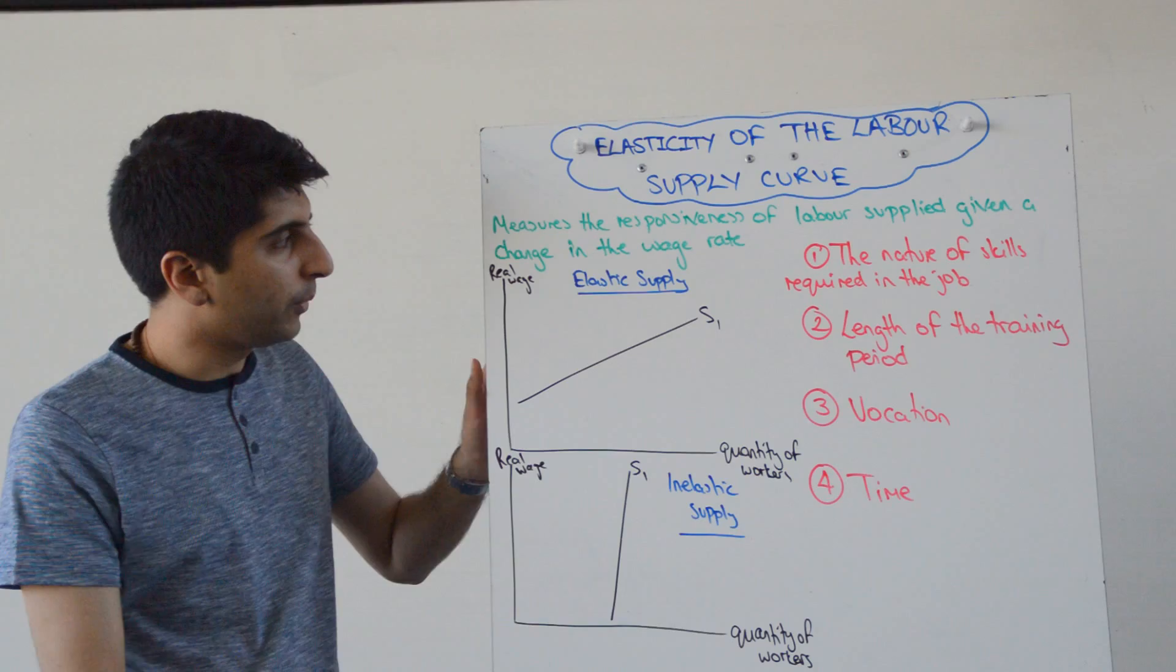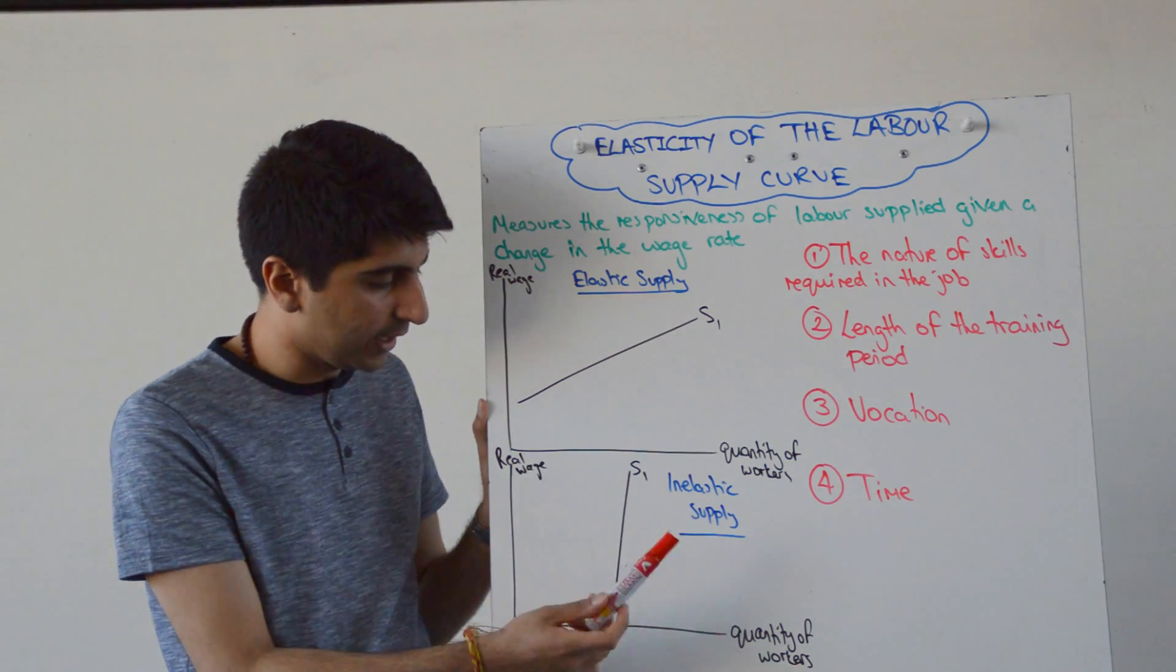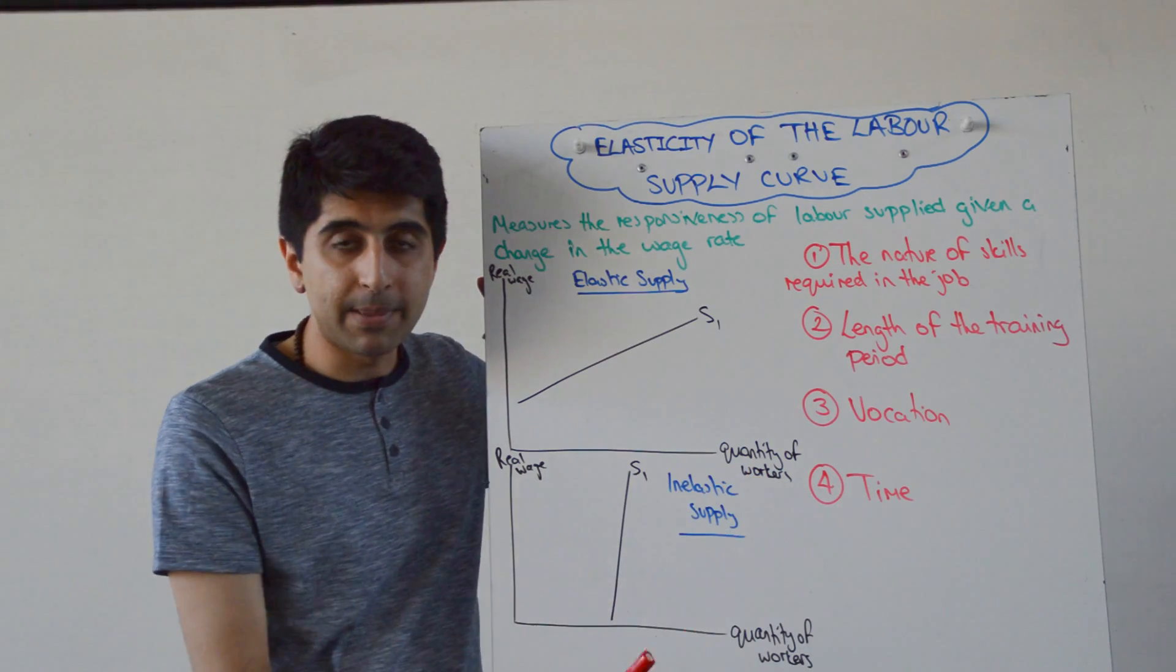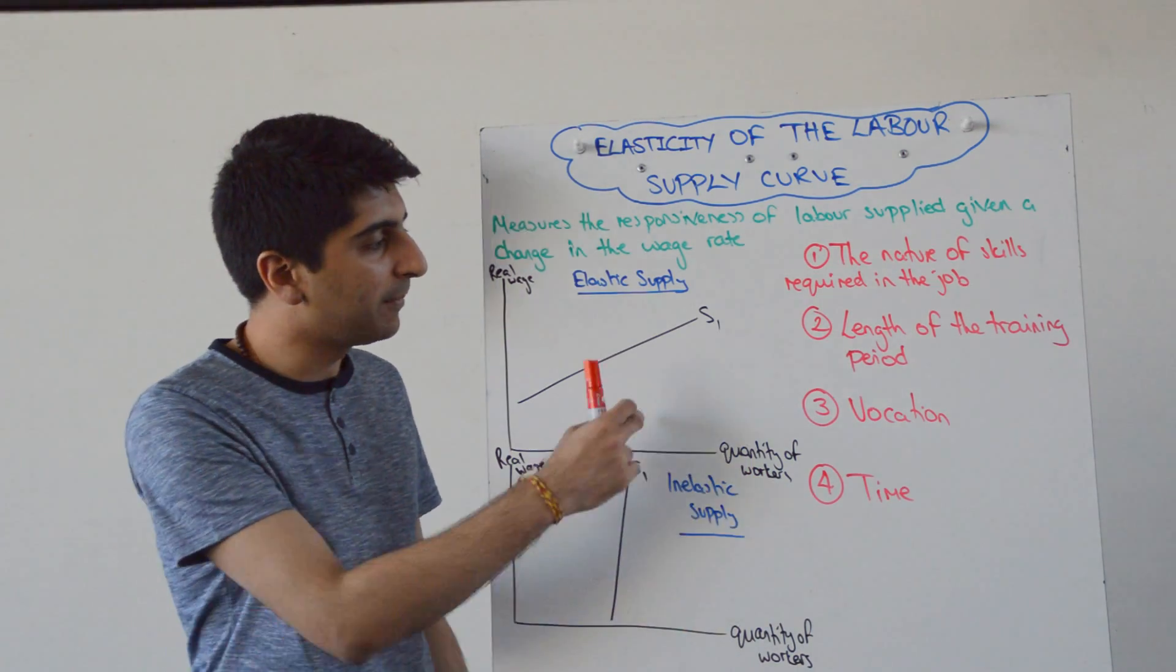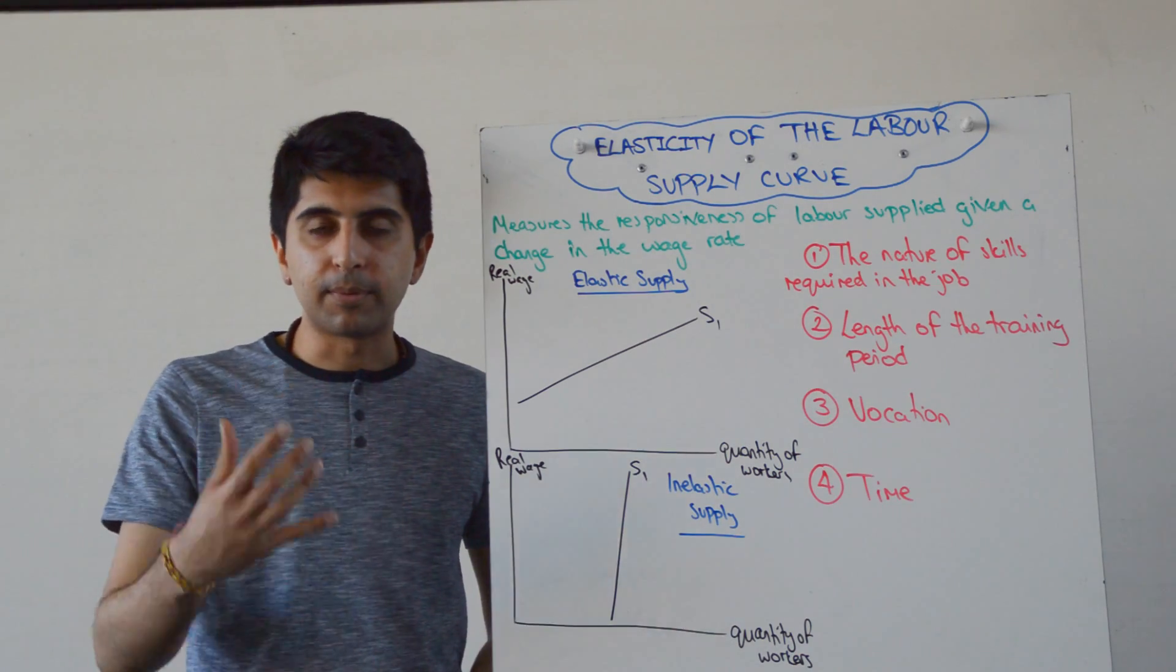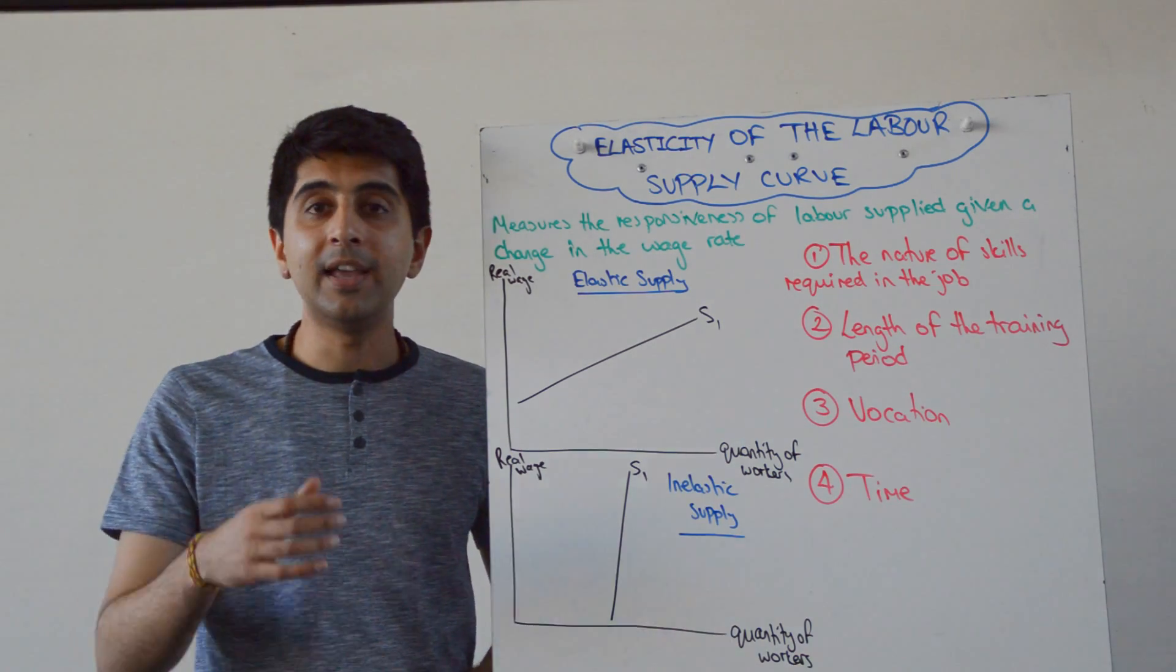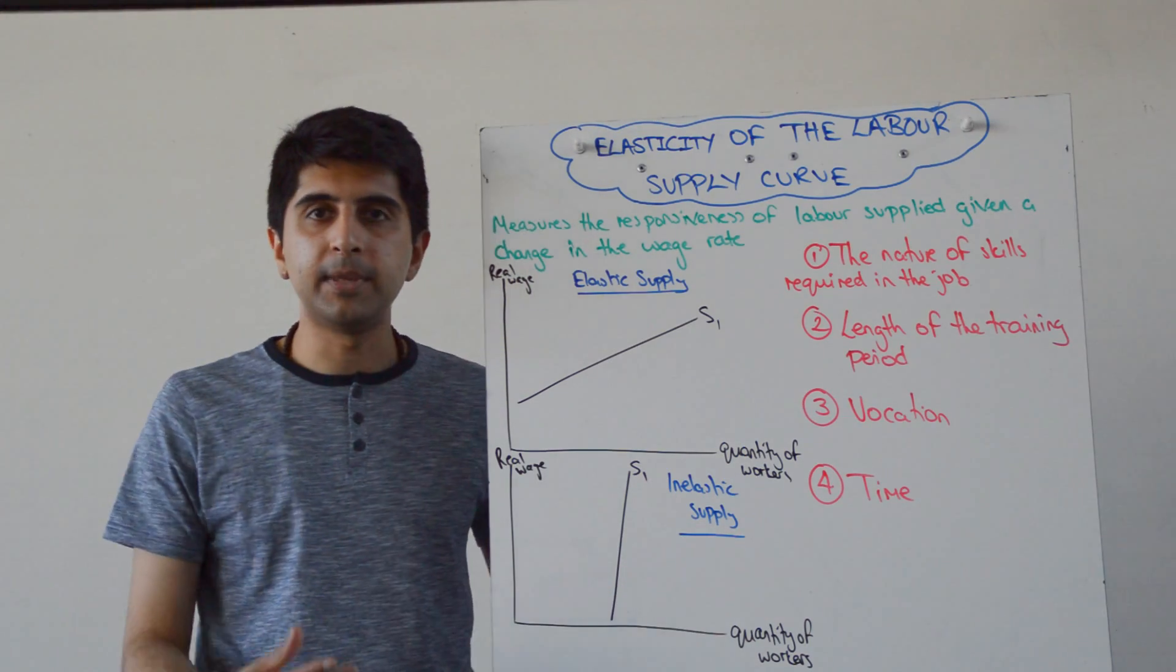So we can have an elastic looking labor supply curve, we can have an inelastic looking labor supply curve. Again, I've drawn this in the labor market, so make sure you're sticking with me in the labor market right here. If we have an elastic labor supply, it means the proportionate change in labor supply is greater than the change in the wage rate, whereas inelastic labor supply means that the proportionate change in labor supply is less than the change in the wage rate.